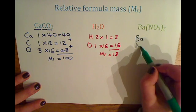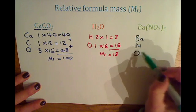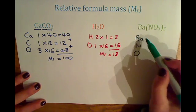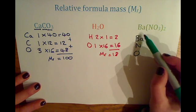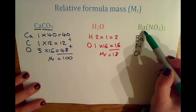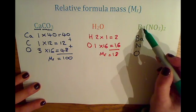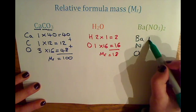And then we need to count the atoms of each element. So for barium, there's no number next to it and there's no brackets around it, so there is just one atom of barium.